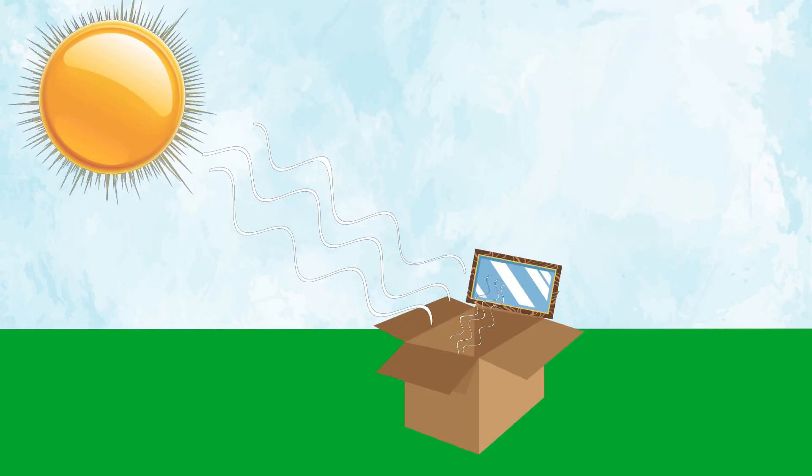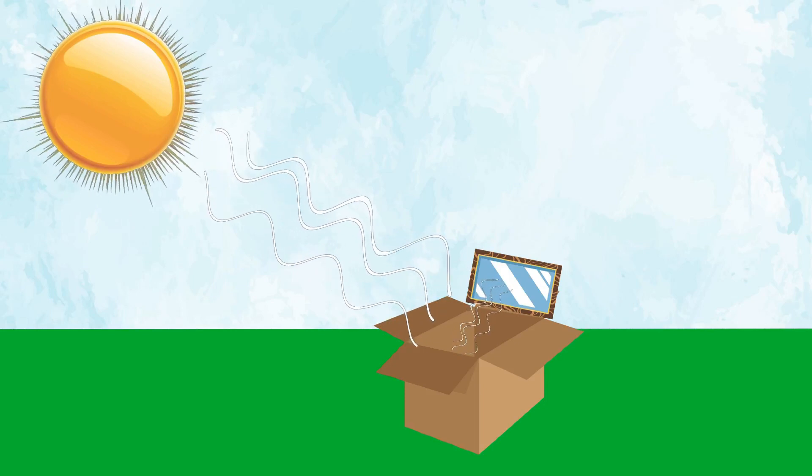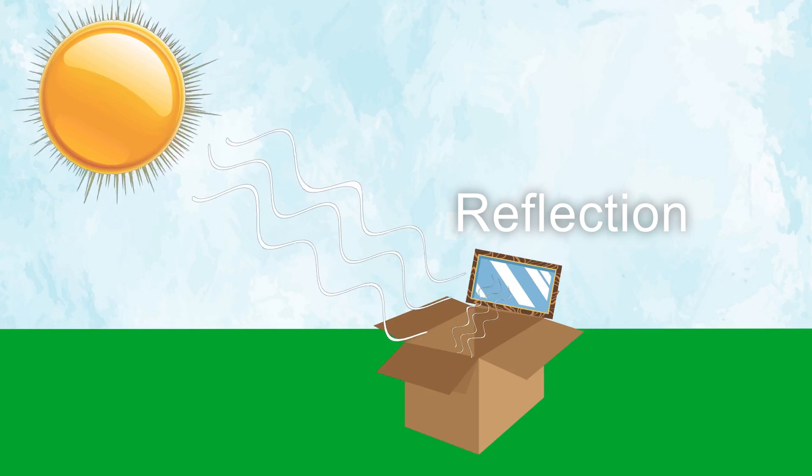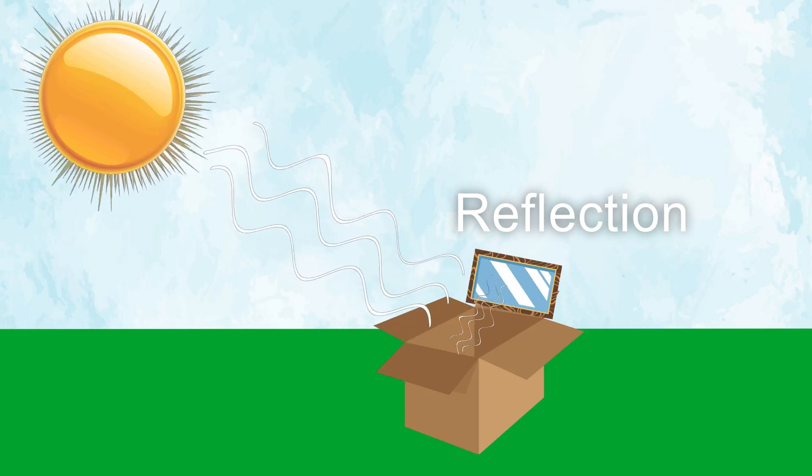This thermal energy we can channel into our solar oven using the reflective properties of tinfoil. The tinfoil acts as a mirror, bouncing the light waves into our solar oven.